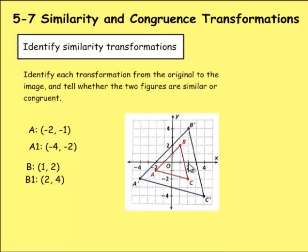And we can do C as well. C would be (2, -2), and then C1 would be (4, -4).